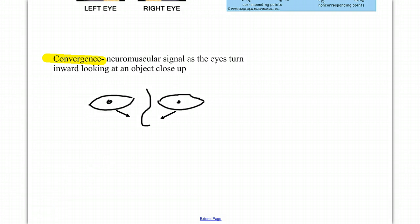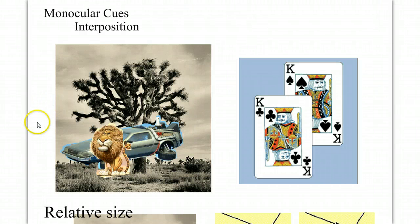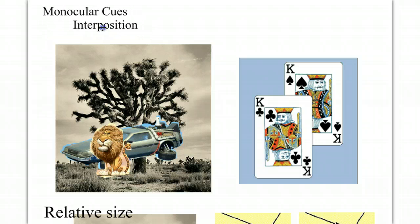Let's move on to the monocular depth cues. If you played with that BB gun when you were a kid and you weren't supposed to, and you put your eye out, well, now you have only one eye. Does that mean you can't perceive depth? Well, no. There are many monocular depth cues. The first one of those is interposition.